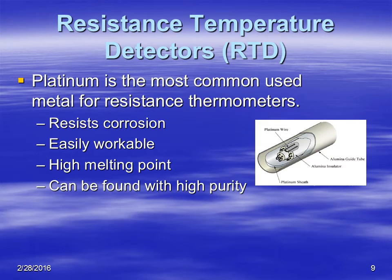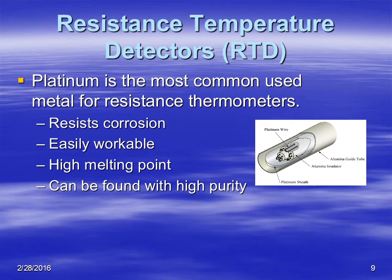The typical or most common metal used in RTDs is platinum. Usually these thermometers are called platinum resistance thermometers. The reason platinum is used is because it doesn't corrode very easily. Most of these sensors are outside exposed to the elements, so it's really important to have a metal that does not corrode. Also, platinum is easily workable, has a high melting point, and can be found with very high purity.